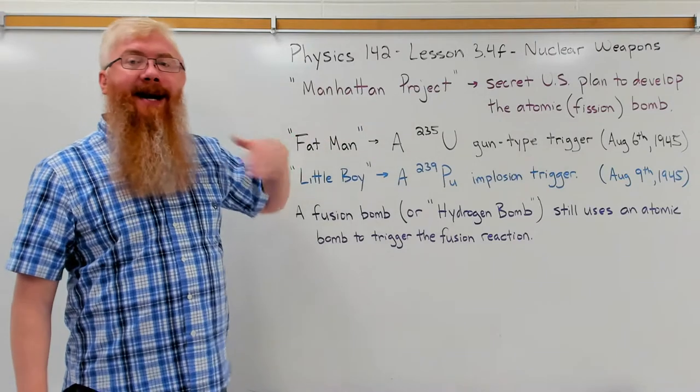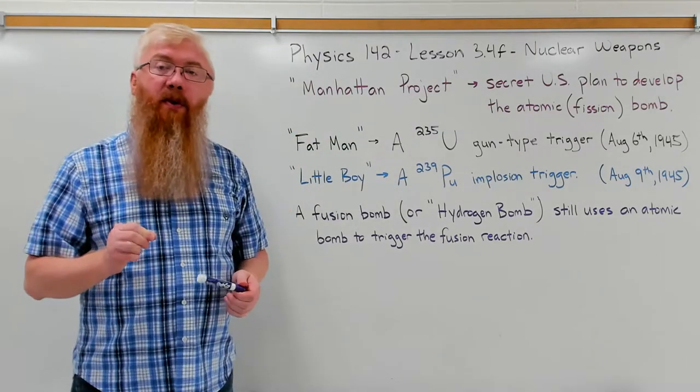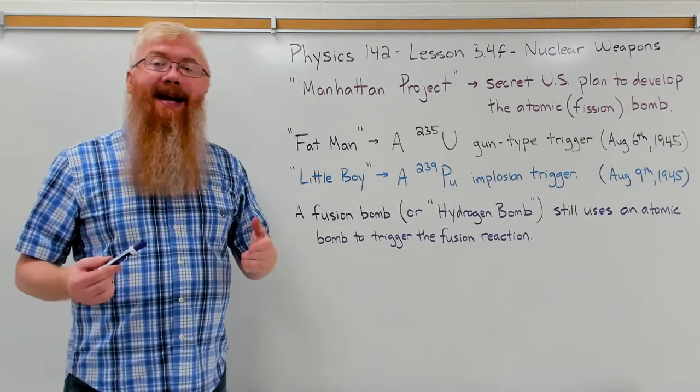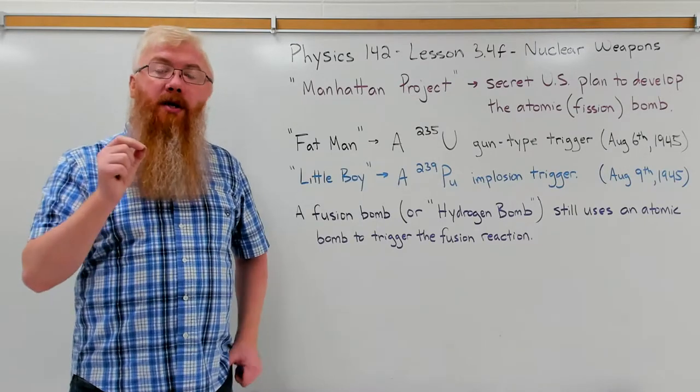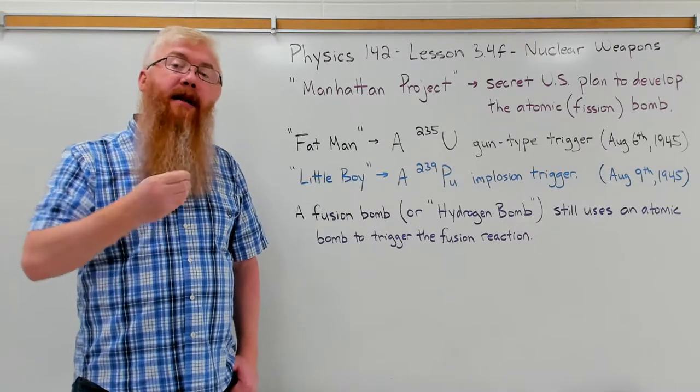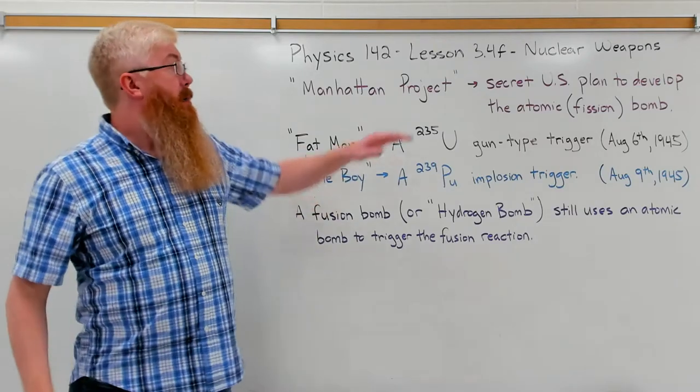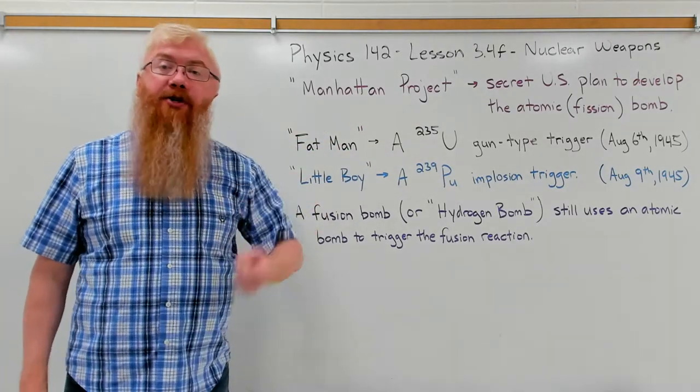After Einstein's special theory of relativity showed that energy and mass were equivalent, it was realized that you could break up heavy nuclei into lighter nuclei and release energy. In that process, you can create a fission bomb.